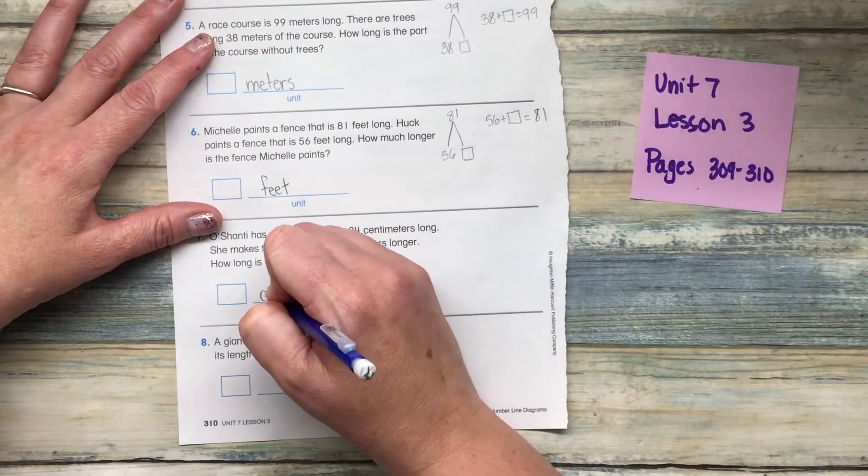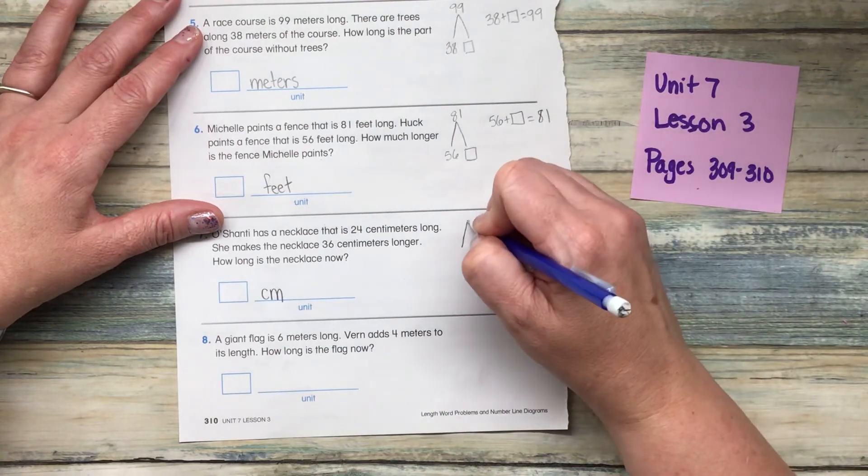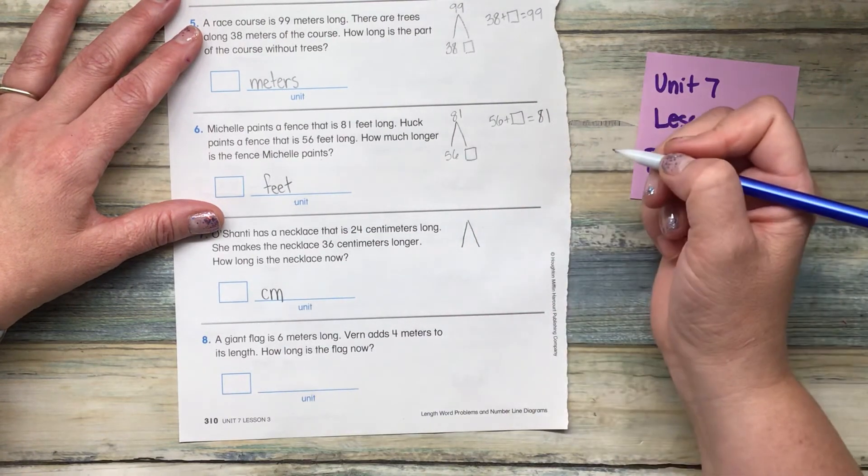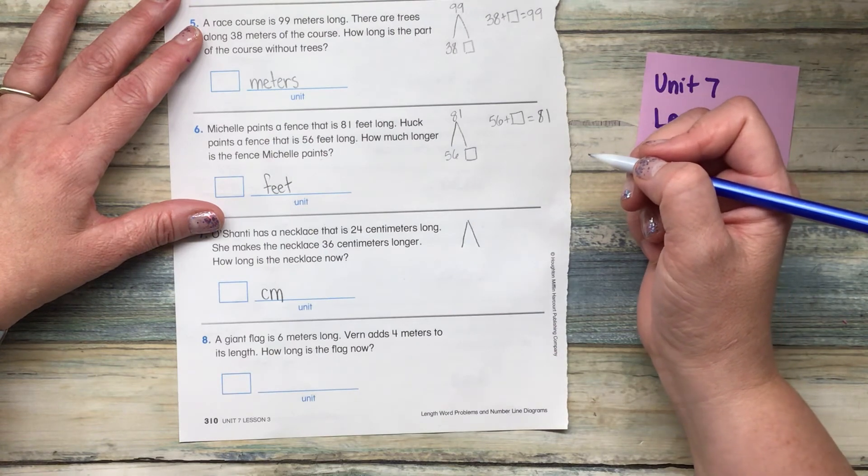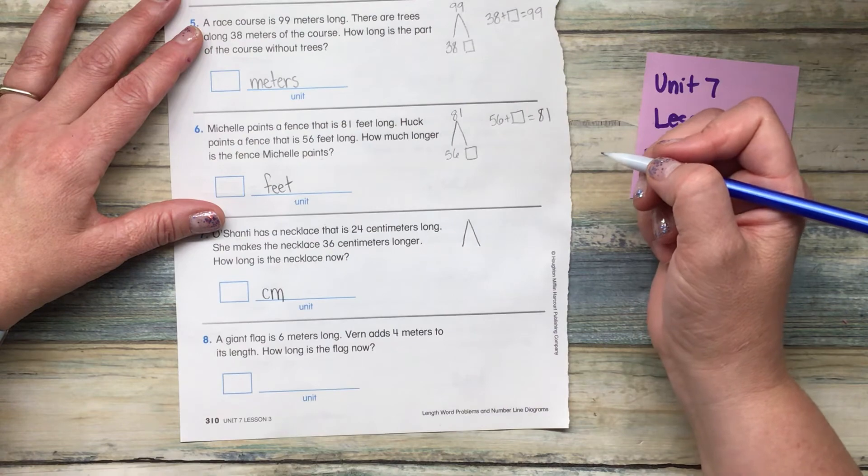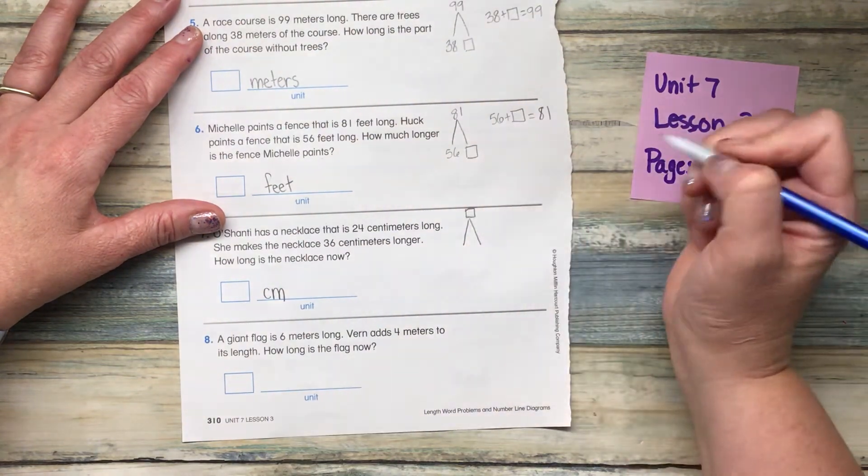Well first, I'm just going to write C in there. I'm not going to write the whole word centimeters. So our math mountain is asking us how long is the necklace total? So that means that we don't know what our total is.